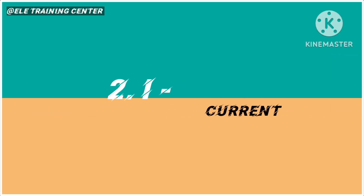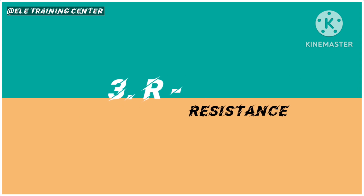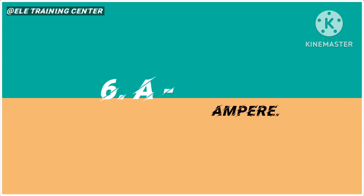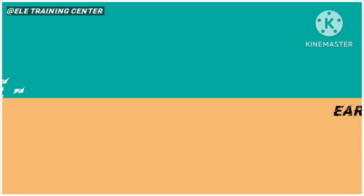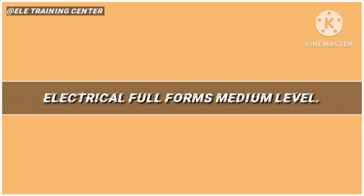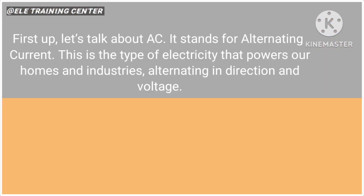V - voltage. I - current. R - resistance. P - power. M - motor. A - ampere. L - line. N - neutral. E - earth. W - watt.